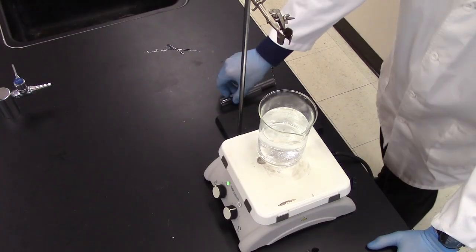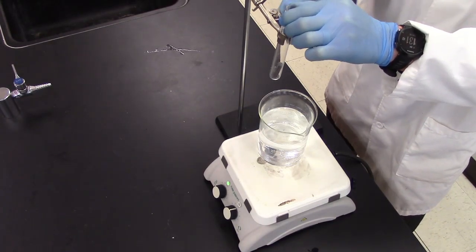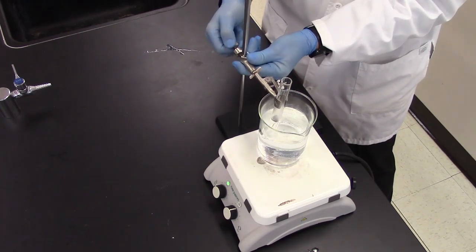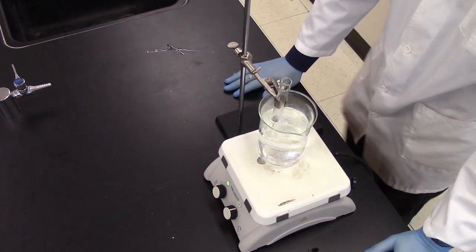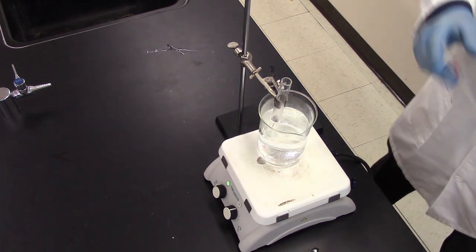My next step is to attach my test tube with the metal to the clamp here and then I'm going to lower my clamp so my test tube is, so the metal rather, is just below the water line. And I'm going to take a thermometer and stick it into the test tube.